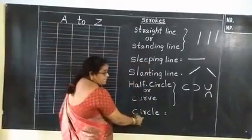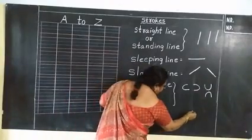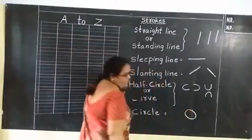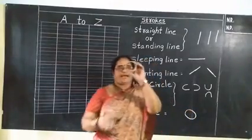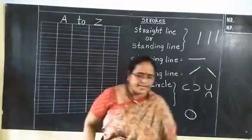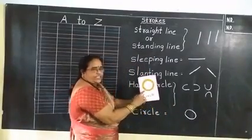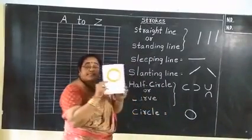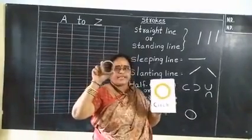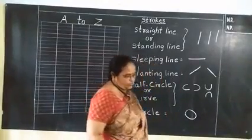And the next one is circle. How do I draw a circle? This is a circle — circle means full round. This is a circle. Full round. What is this? Circle. This is a full circle.